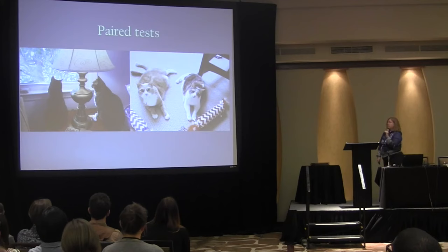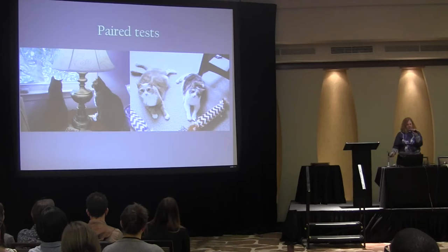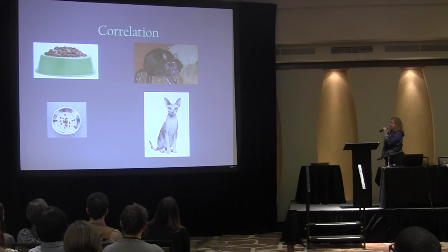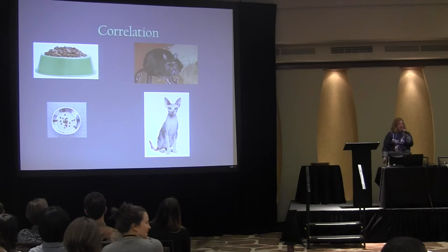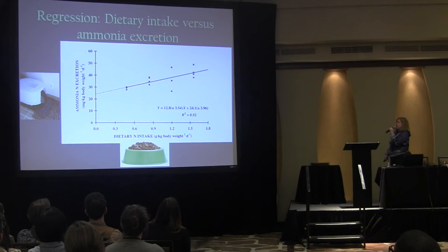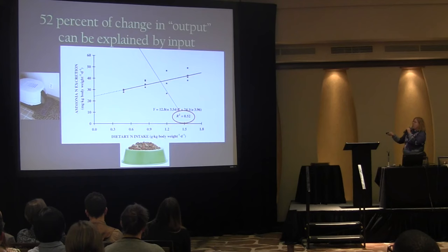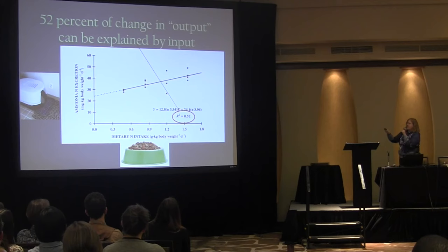We can use our data to do paired tests. And correlation — here we see a possible correlation between intake and size. We can also take that a step further and do a regression. This is an actual study of dietary intake versus ammonia excretion. Digging into the formula, we can say that 52% of the change in the output demonstrated by the litter box can be explained by the input.